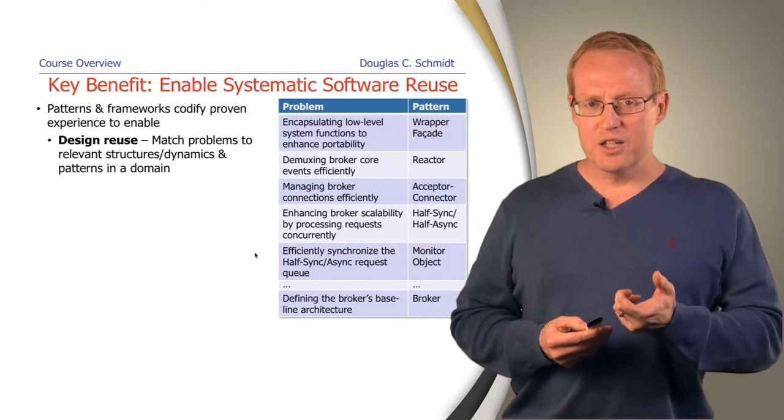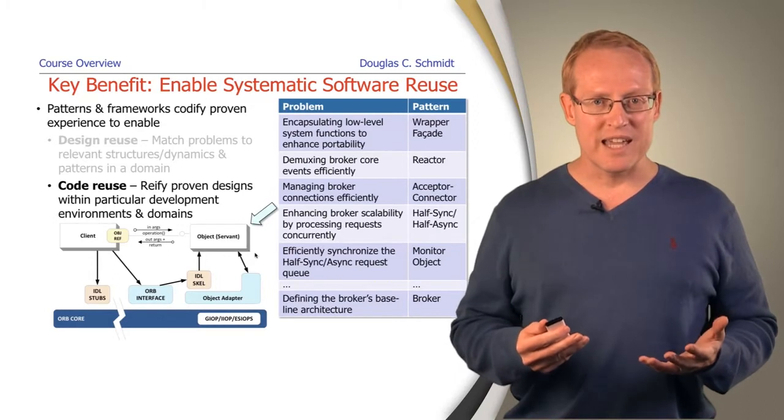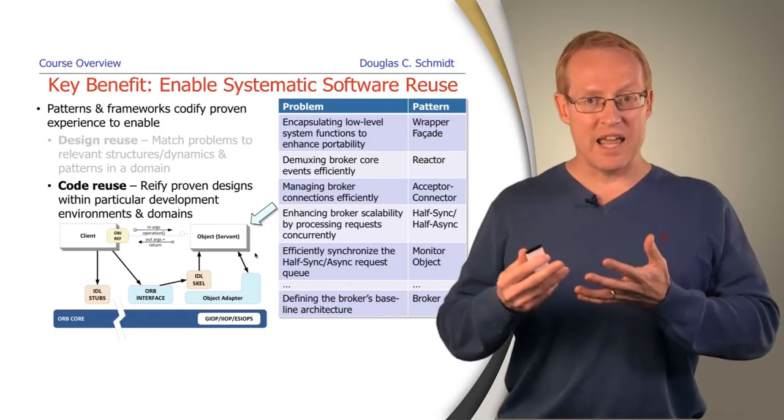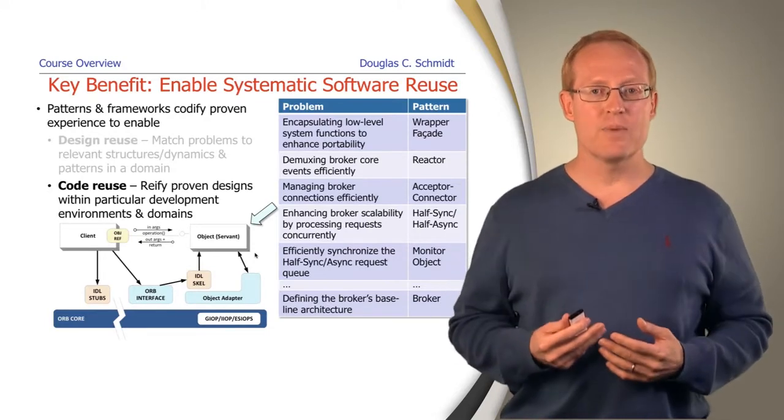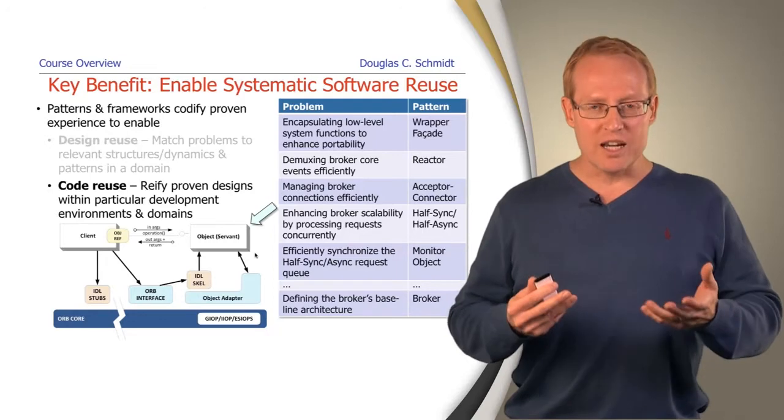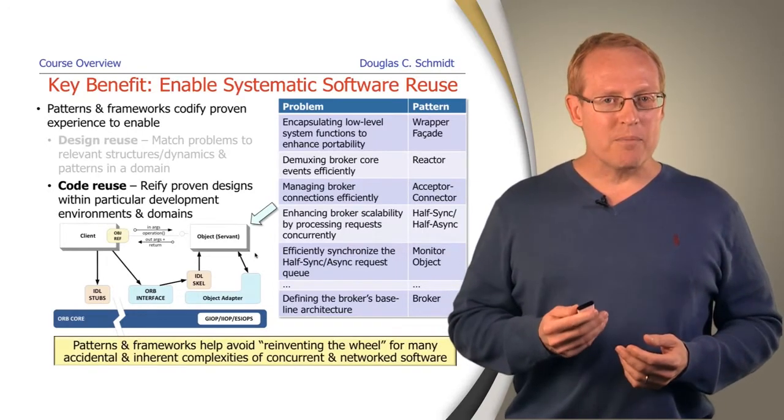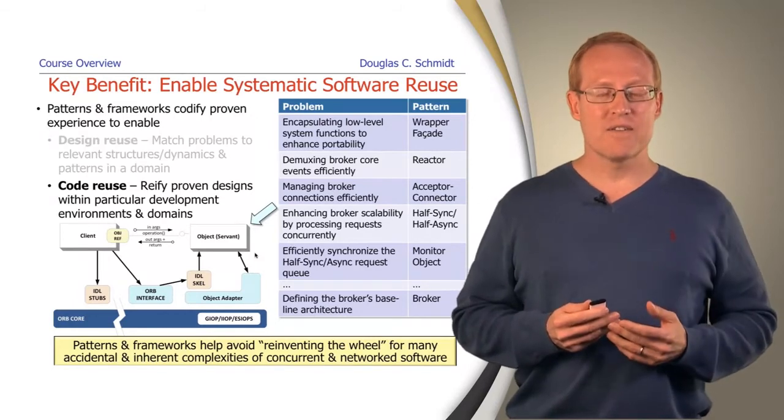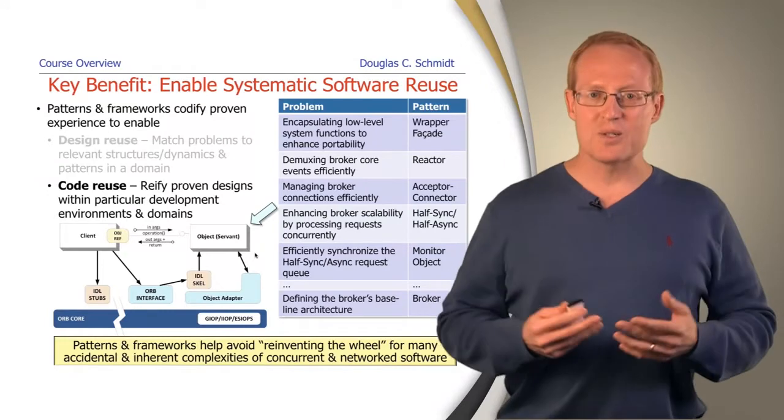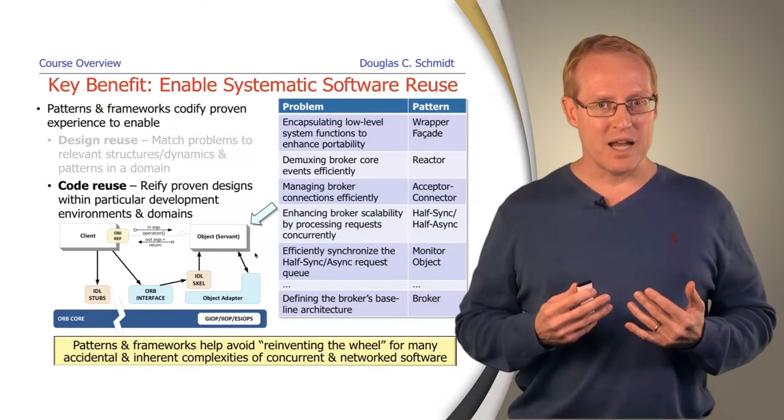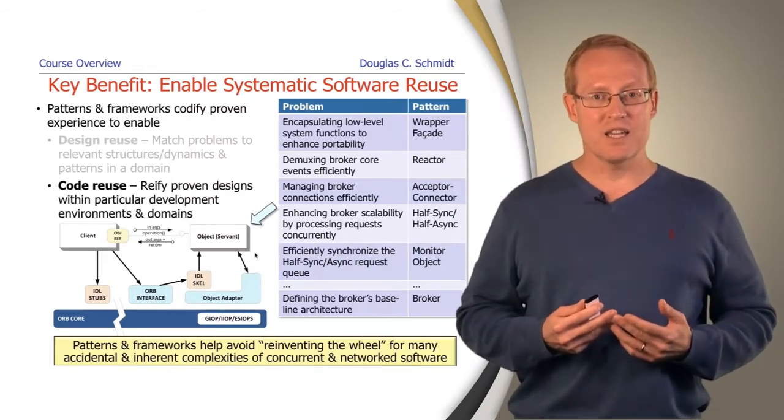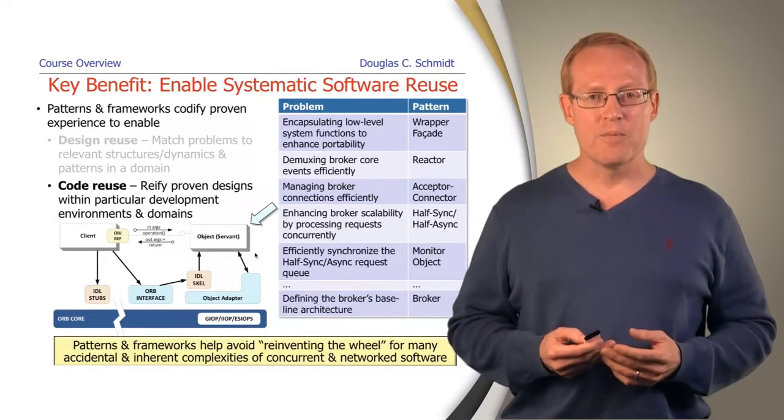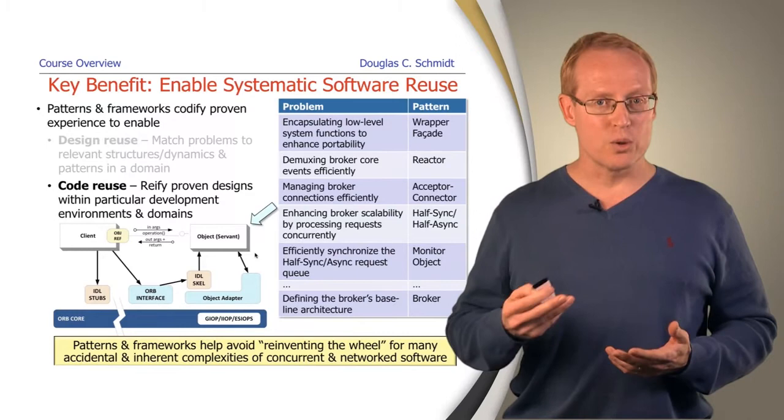But there's more than just design to being an effective software professional. It's also important to be able to reuse the code because ultimately that's what ships, that's what sells. So frameworks allow us to be able to get reuse of detailed designs and the source code. It allows us to be able to reify or instantiate proven designs that work in particular domains, for particular development environments, particular languages. The great thing about patterns and frameworks is that they allow us to avoid reinventing the wheel for many of the accidental and inherent complexities of concurrent and network software. So once you take the time to understand these design roles and responsibilities, once you understand and take the time to document and implement those designs in the form of frameworks, then you don't have to go back and continually rediscover and reinvent these solutions. You can reuse them, which is very helpful. Saves a lot of time, saves a lot of costs, provides much better quality solutions in the long run.